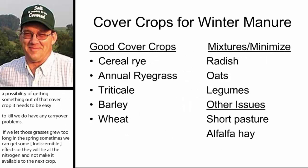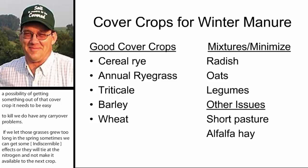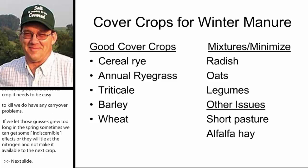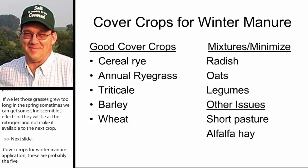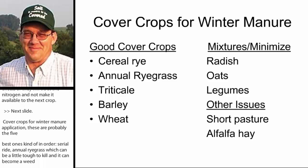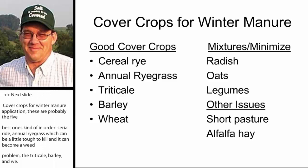For cover crops for winter manure application, here are probably the five best ones in order: cereal rye, annual ryegrass — though with annual ryegrass it can be a little tough to kill and can become a weed problem — triticale, barley, and wheat. If you're looking at mixtures, don't put out too many radishes — probably no more than a pound per acre at most. Oats can be part of the mixture, and you can include a few legumes, but you don't want them to make up too much.